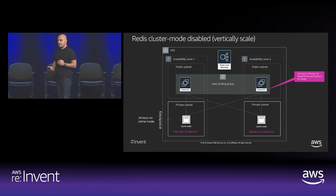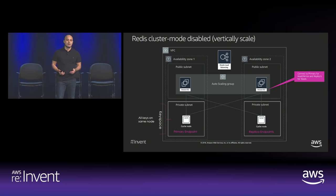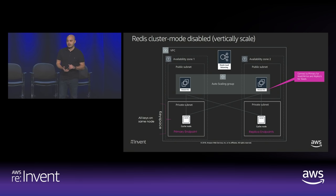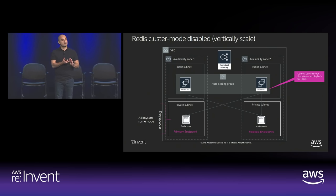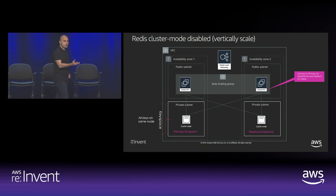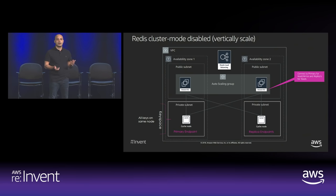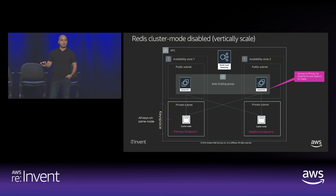Let me level set on the different Redis topologies. The vertically scaled topology — some call it classic mode — means all your data resides on one node. You have a primary node, and for every primary you can have zero to five replicas. The largest cluster you can have is whatever data fits in the largest instance type. An application would connect to the primary endpoint and to replica endpoints, scaling reads off the replicas and writes to the primary.